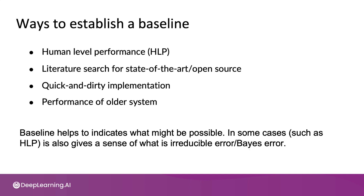What a baseline level of performance does is indicate what might be possible. In some cases, such as when using human level performance on unstructured data problems, the baseline can also give you a sense of the irreducible error, or Bayes error — what is the best that anyone could possibly hope for. For instance, it helps us realize that maybe low bandwidth audio is so bad that more than 70% accuracy simply isn't achievable, as in our earlier example. This helps us be much more efficient in prioritizing what to work on.